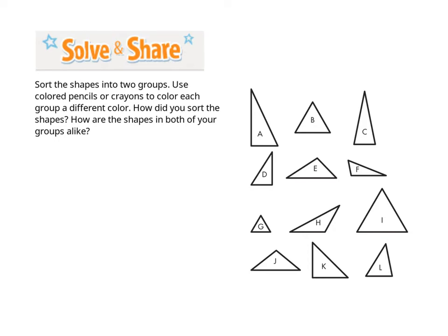What type of polygons are you looking at on this page? They're triangles. Do they all look the same? Not necessarily, but what is the same about them? They all have three sides.